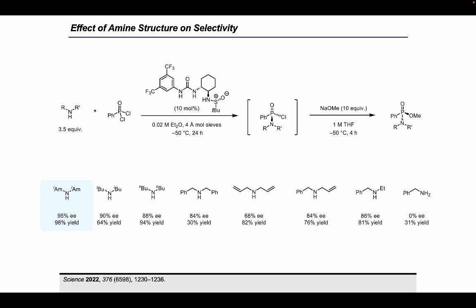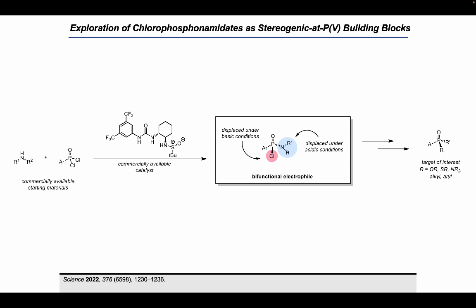Now we can begin to make sense of the variation in ee observed with different amines and why this reaction is not general for all secondary amines. While the lack of generality for different amines is not ideal, we had successfully observed very high levels of enantioselectivity with diisoamylamine. Moving forward with diisoamylamine, we decided to explore the synthetic utility of this method, since chlorophosphonamidates could be used as chiral building blocks.